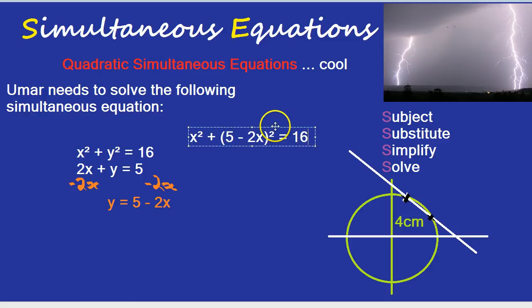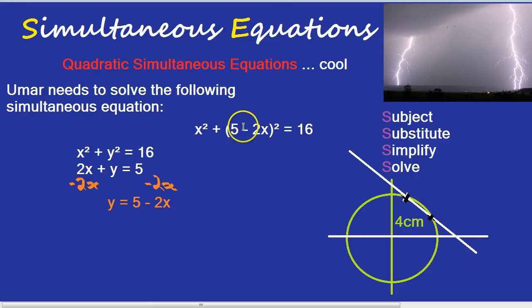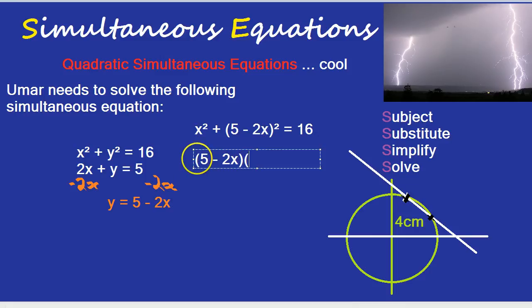Now comes the laborious bit. Notice, if we square this bracket, it does not mean 5 squared and minus 2X squared. We have to do the full double bracket expansion, as in 5 minus 2X times by 5 minus 2X. Front times front. 5 times 5 is 25.